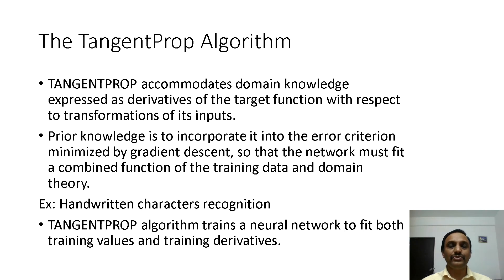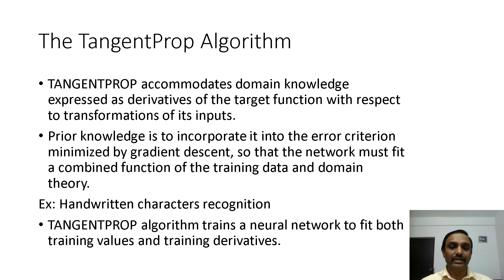The second approach is to use prior knowledge to alter the objective of the hypothesis space search. In this approach, the goal criterion is modified to require that the output hypothesis fits the domain theory as well as the training examples. This approach uses gradient descent search.